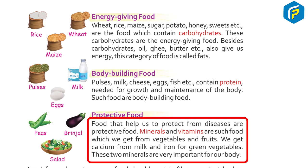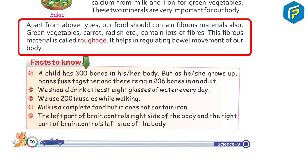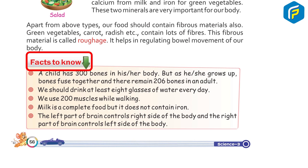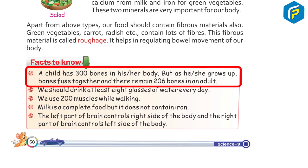Apart from the above types, our food should also contain fibrous materials. Green vegetables, carrots, radish, etc. contain lots of fiber. This fibrous material is called roughage, and it helps in regulating the bowel movement of our body.